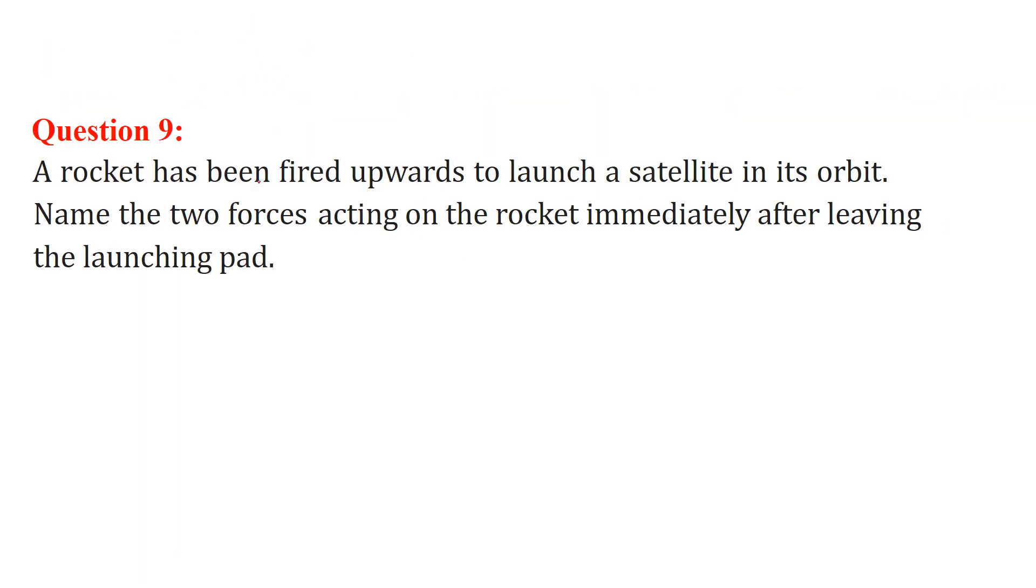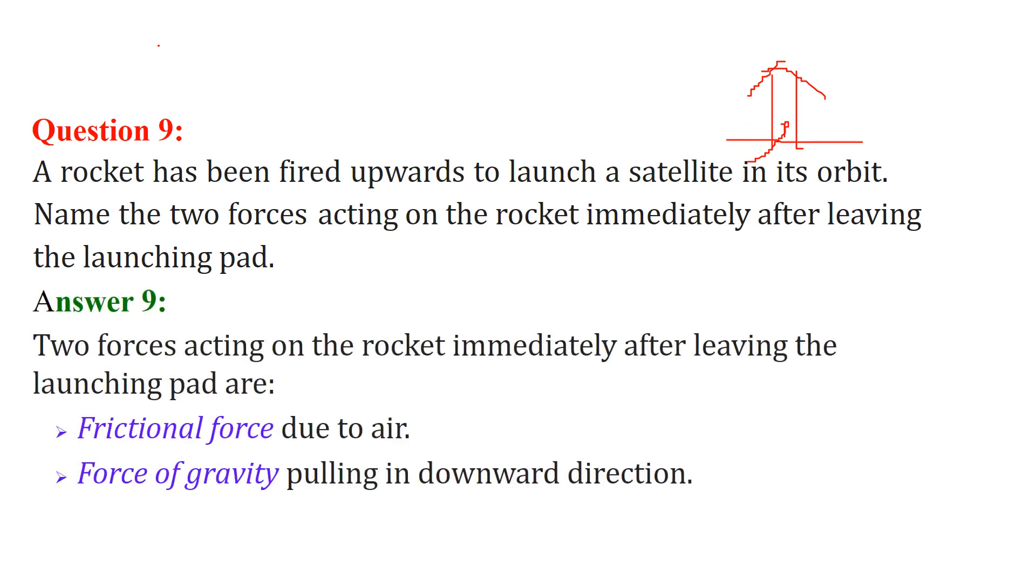A rocket has been fired upward to launch a satellite in its orbit. Name the two forces acting on the rocket immediately after leaving the launching pad. So this is the launching pad and this is the rocket which is going up. First of all there is inside force which is the propellant force, which is actually propelling or making this rocket lift up with satellite in it. But the forces acting on the rocket immediately after leaving the launching pad are frictional force due to air and force of gravity pulling it in downward direction.